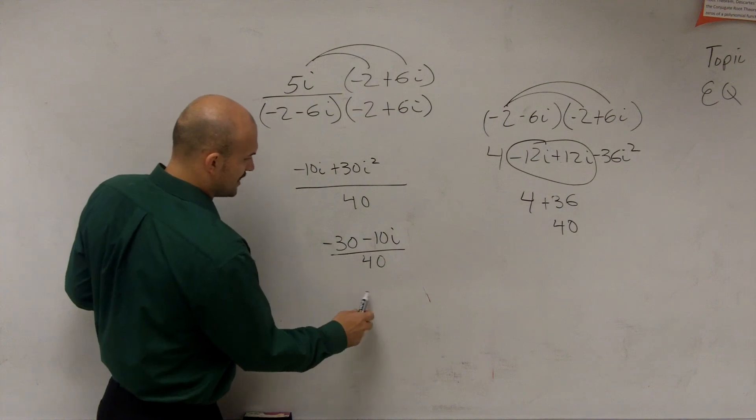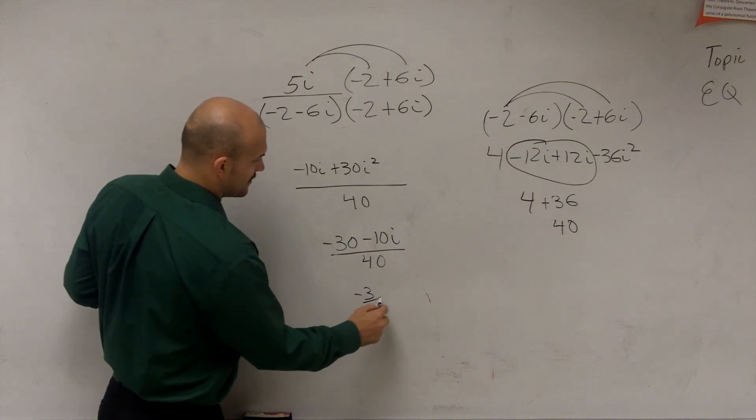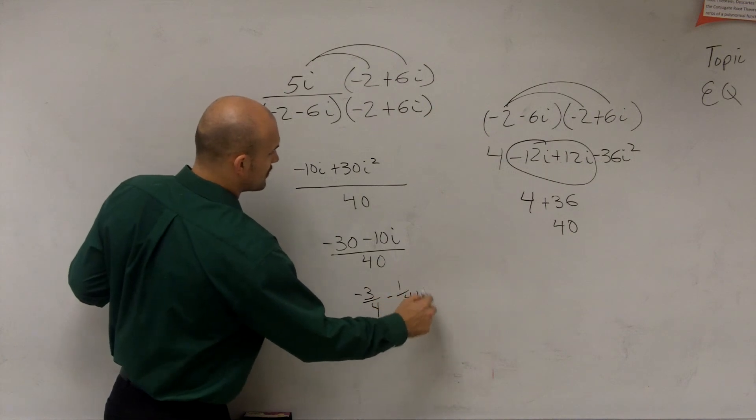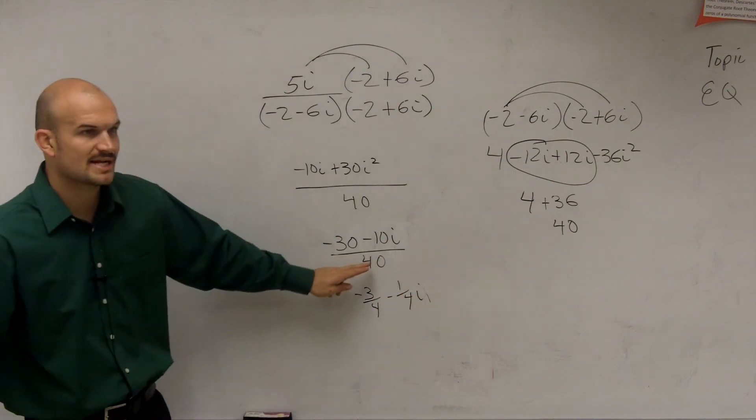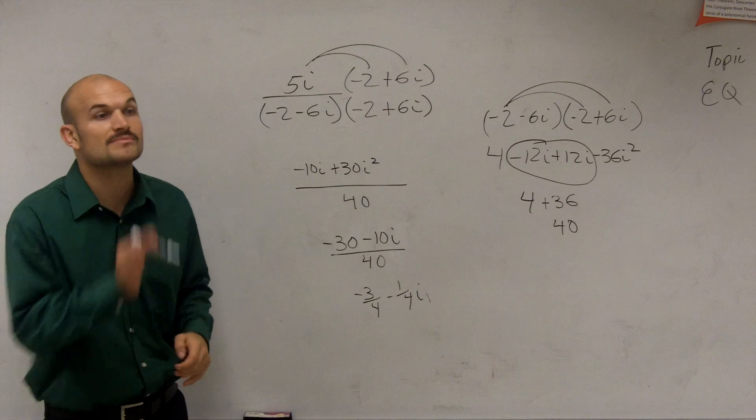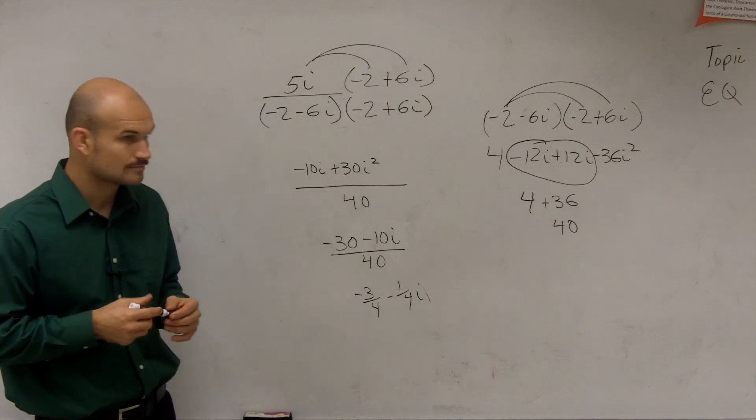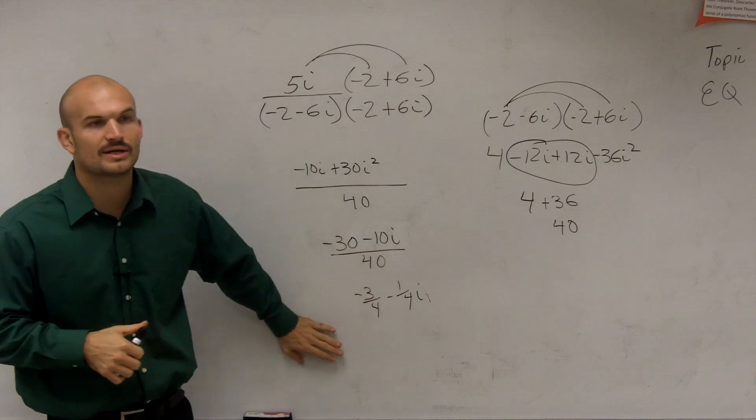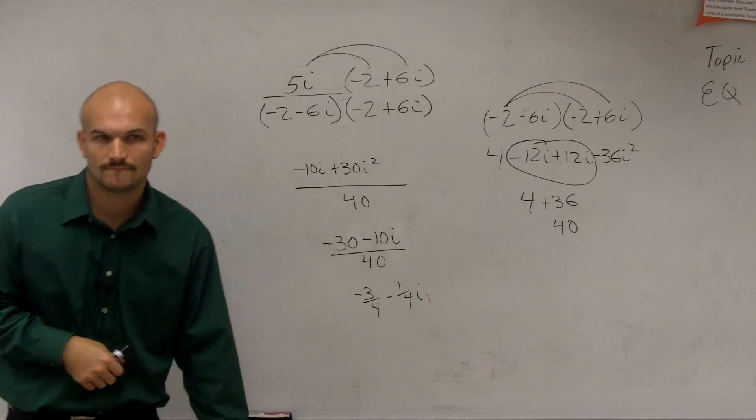So therefore, this is going to be, by reducing this, I'll have negative 3 fourths minus 1 fourth i. So what I did was I divided 40 into both of those terms. If we don't simplify it, you will get marked down. So make sure you put it in complex form. All right? Cool.